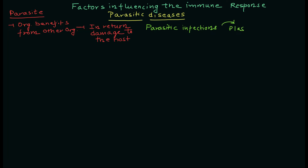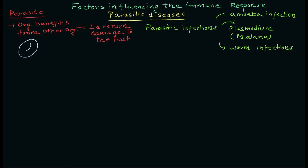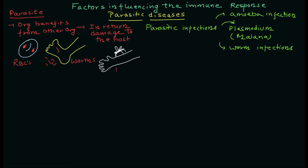The infections caused by parasites are parasitic infections. For example, Plasmodium causes malaria. Worm infections and amoeba infections are also in this category. The malaria parasite enters the body and replicates inside the red blood cells. Worms can enter through cuts or wounds. Insect vectors can also transmit particular parasites, as we know happens in the case of the malaria parasite and other parasitic infections.